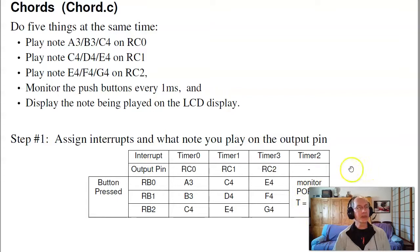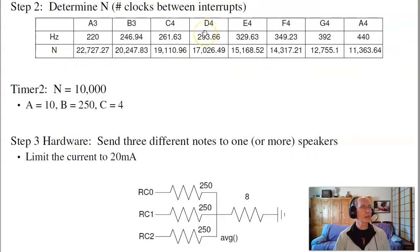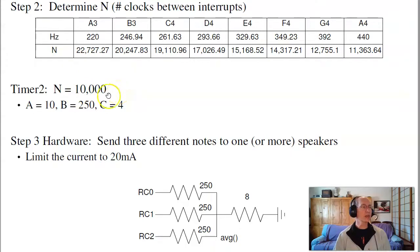Plus you've got the main routine, which displays the number of clocks between interrupts for timers 0, 1, and 2 — so that's five things at the same time. For timers 0, 1, and 3, the number of clocks needed between interrupts is calculated as 10 million divided by 2 divided by the frequency. For timer 2, I want it to run every millisecond, which means N is 10,000, A is 10, B is 250, C is 4.